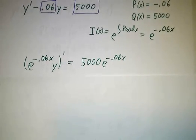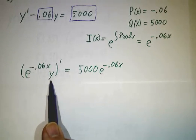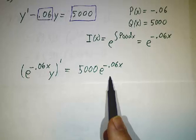Multiply through by the integrating factor, and the differential equation becomes e to the minus 0.06x times y prime is 5,000 e to the minus 0.06x.